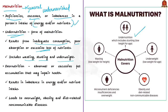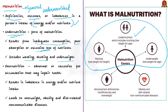Undernutrition is one form of malnutrition and it includes wasting, stunting, and underweight. Wasting means having low weight for height; stunting means having low height for age; and underweight means low weight for age. Undernutrition is calculated by the prevalence of wasting, stunting, and underweight among the population, especially children. The term malnutrition also encompasses overnutrition, which is the opposite of undernutrition.